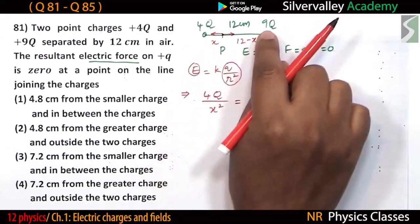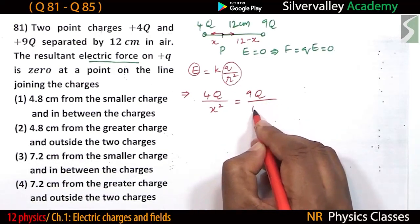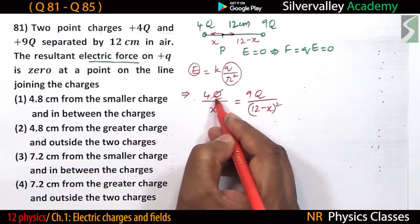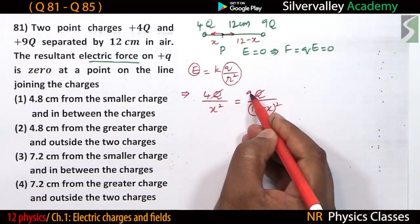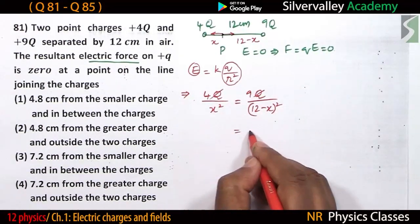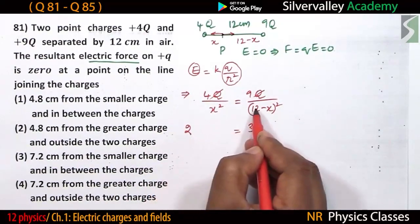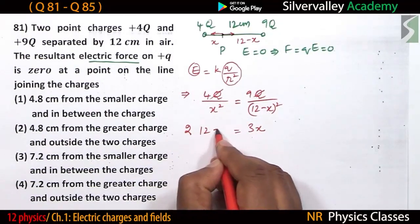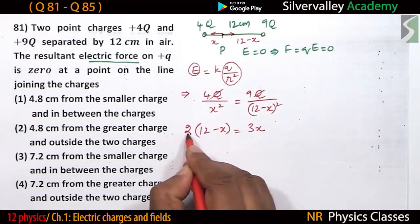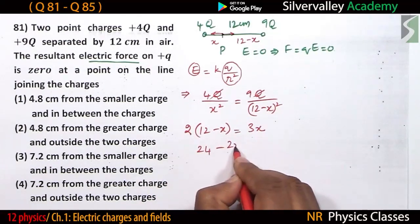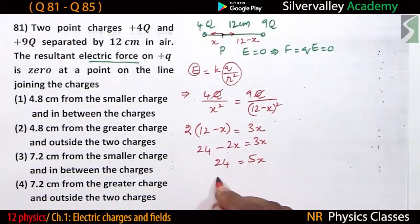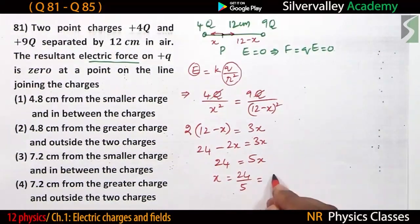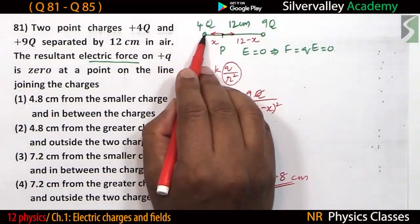Setting up the equation: 4Q divided by X squared equals 9Q divided by (12 minus X) squared. Cancelling Q and taking square roots gives 2 divided by X equals 3 divided by (12 minus X). Solving: 24 minus 2X equals 3X, so 5X equals 24, giving X equals 24 divided by 5, which is 4.8. Therefore the point is 4.8 centimeters from the smaller charge 4Q.